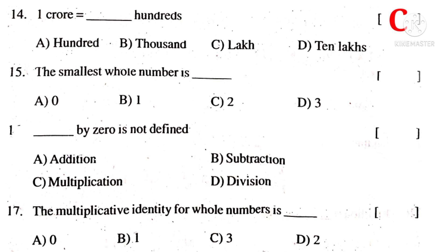The smallest whole number is 0. So the correct choice is A. Dash by 0 is not defined. Addition, subtraction, multiplication are defined, but division by 0 is not defined. So the correct choice is D.